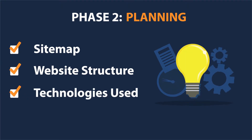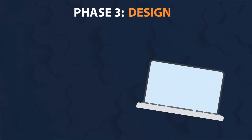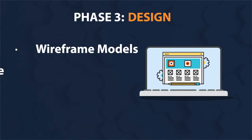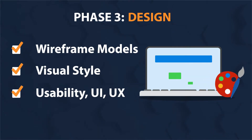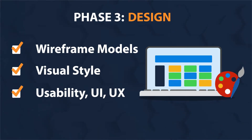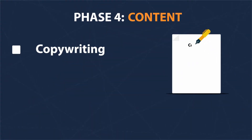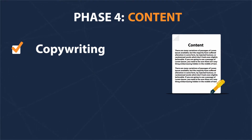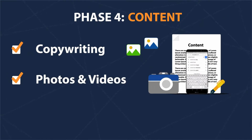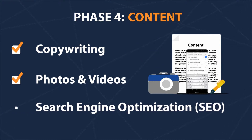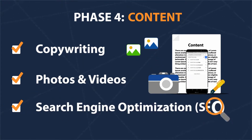Phase three is design — this is not only focused on wireframes and visual styling, but also on the usability of the user interface and the best possible user experience. Phase four is content — content is a very important part of the process, including choosing the right text, copyright, photos, or videos, all optimized not only for your visitors but also for search engine optimization, SEO.